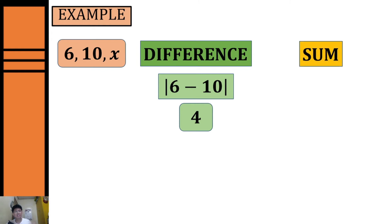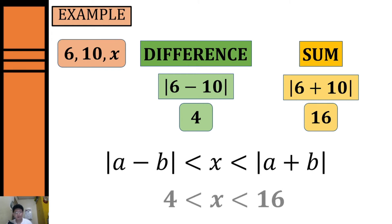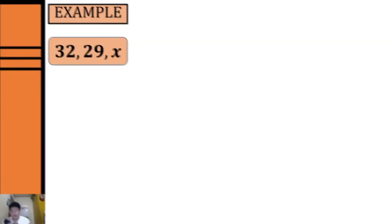Next, we get the sum: six plus ten equals sixteen. So the range for the possible measurement of our third side will be from four to sixteen. All the numbers between four and sixteen are possible measurements for our third side.